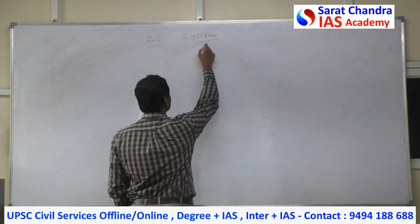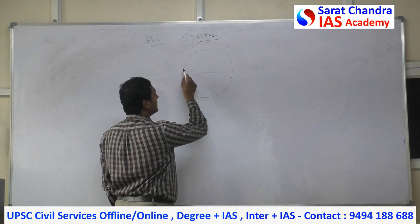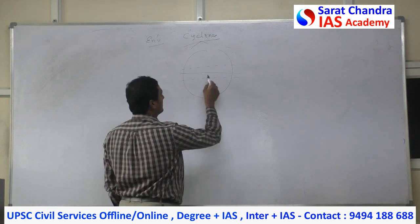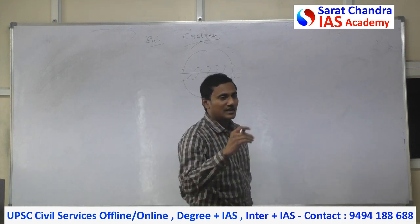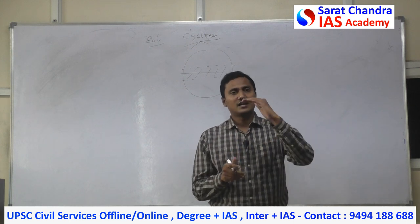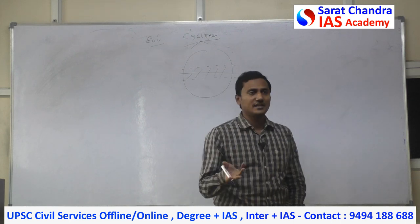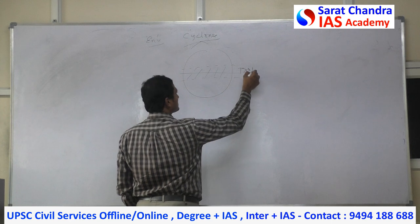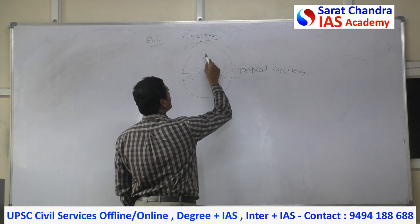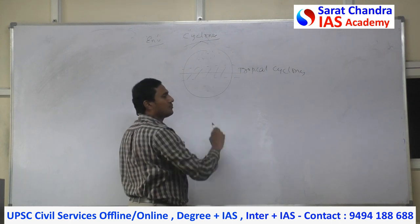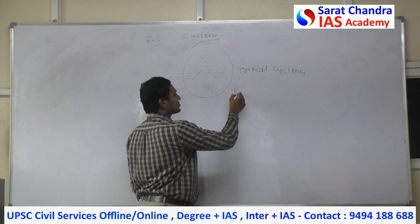Cyclones are divided into two types. The area between the Tropic of Cancer and the Tropic of Capricorn — roughly 30 degrees north to 30 degrees south — is called the tropical region. Cyclones occurring in that region are called tropical cyclones. Cyclones that occur in the temperate area, and even in the polar area, are called extra-tropical cyclones.